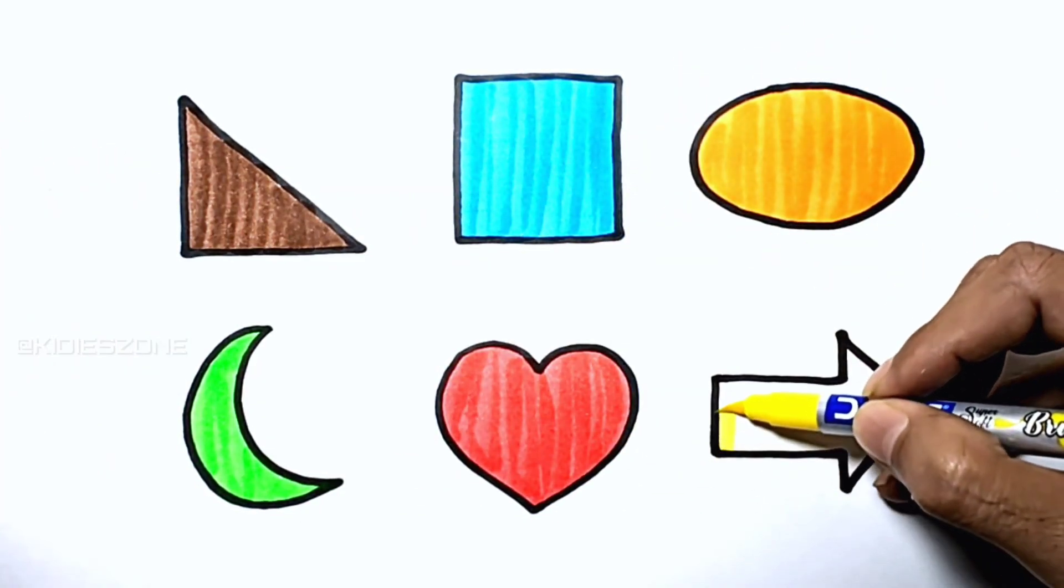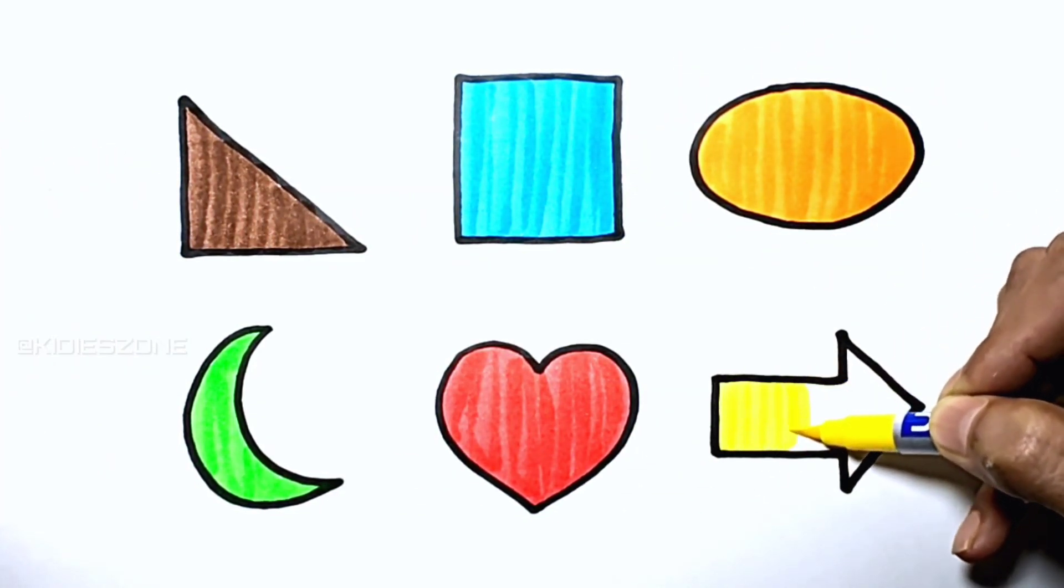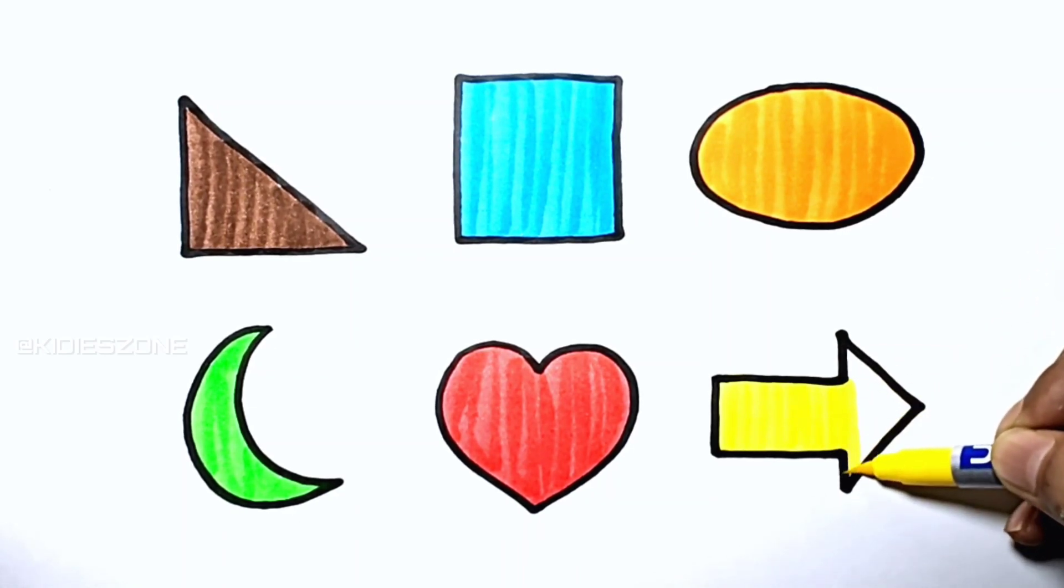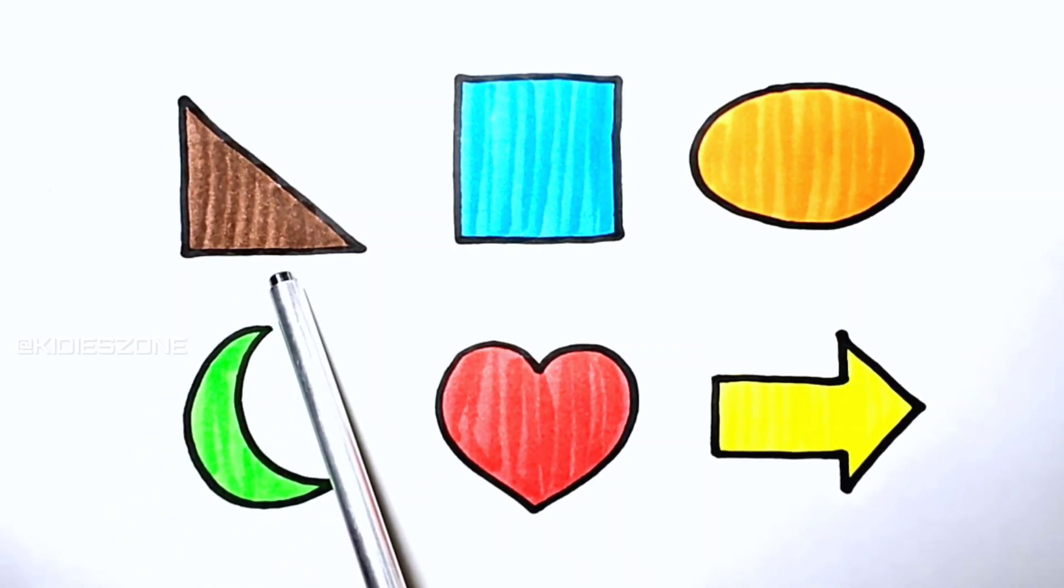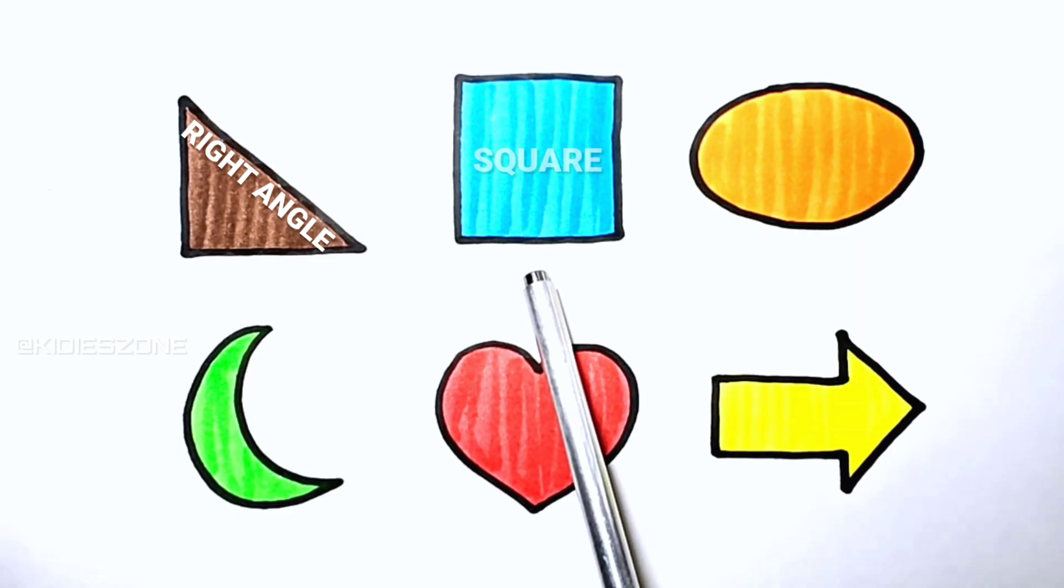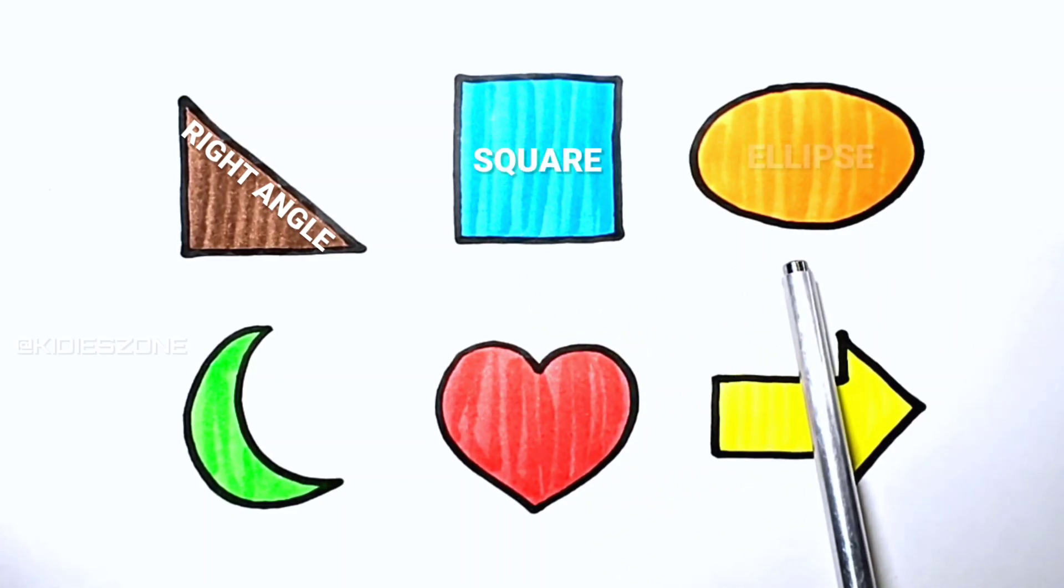Yellow. H I J K L M N O P Q R S T U V W X Y and Z. Now I know my ABC's, next time won't you sing with me. Right angle, Crescent.